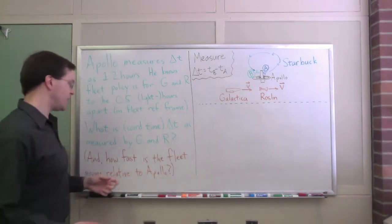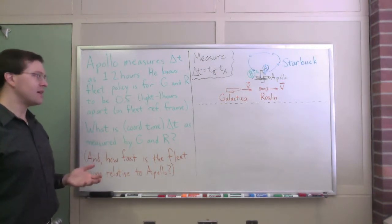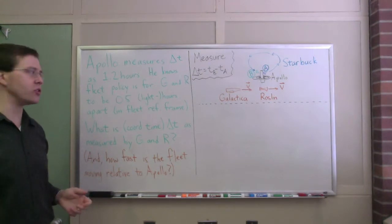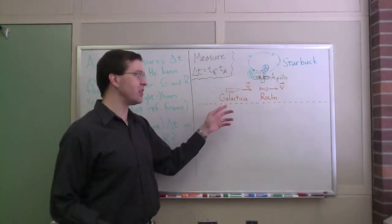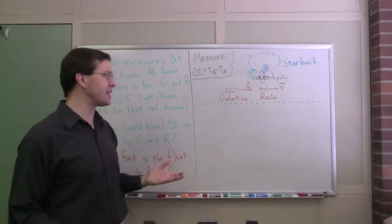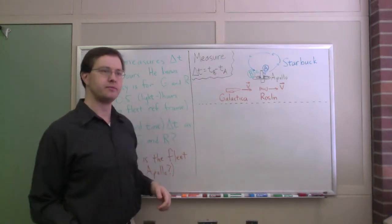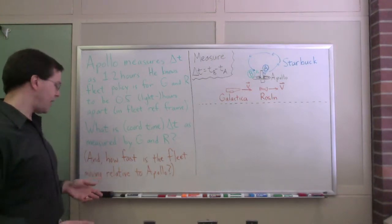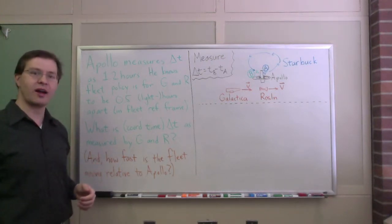So my question is, what is the time delta t, coordinate time, as measured by Roslin and the Galactica between event A and event B, the time that they think it takes Starbuck to do that round trip? All right, let's figure this out. To do this, and I also would ask, how fast is the fleet traveling?